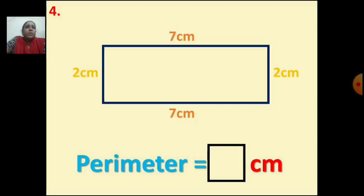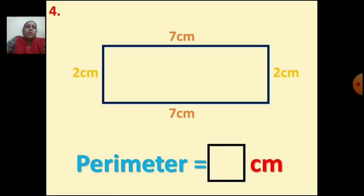Next question. Here you can see it is a rectangle, and the length and breadth are given. You add all 4 sides: 2 plus 7 is 9, 9 plus 2 is 11, and 11 plus 7 is 18. The perimeter of this rectangle is 18 cm.